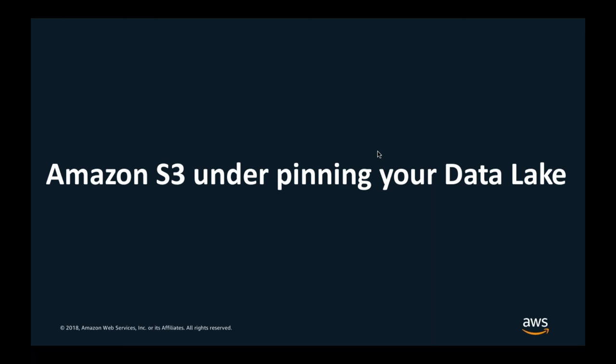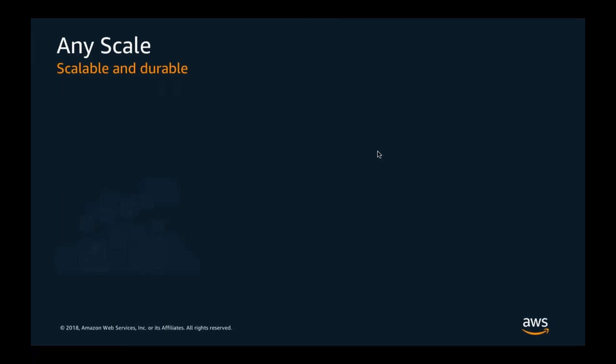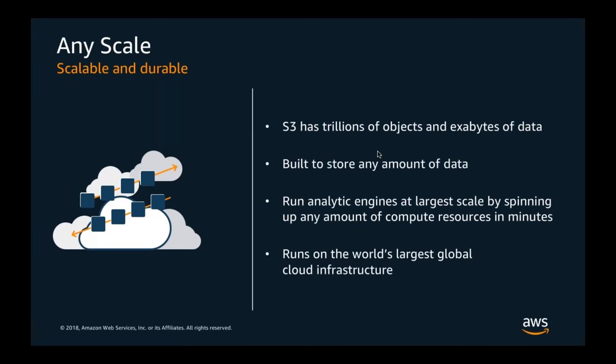Amazon S3 is a Simple Storage Service — one of our earliest services, operating for 11-plus years. It's primarily an object store where you can store any kind of binary object. From a storage perspective it's built for any scale — today it stores trillions of objects, exabytes of data, and regularly peaks at more than a million requests per second.